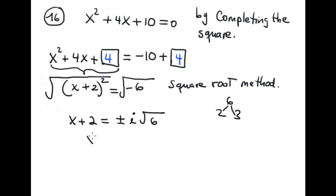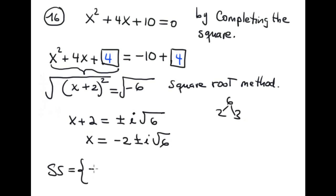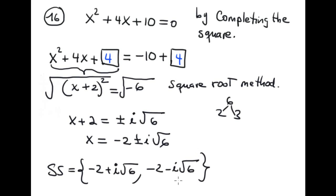So x equals −2 ± i√6. The solution set is { −2 + i√6, −2 − i√6 }.